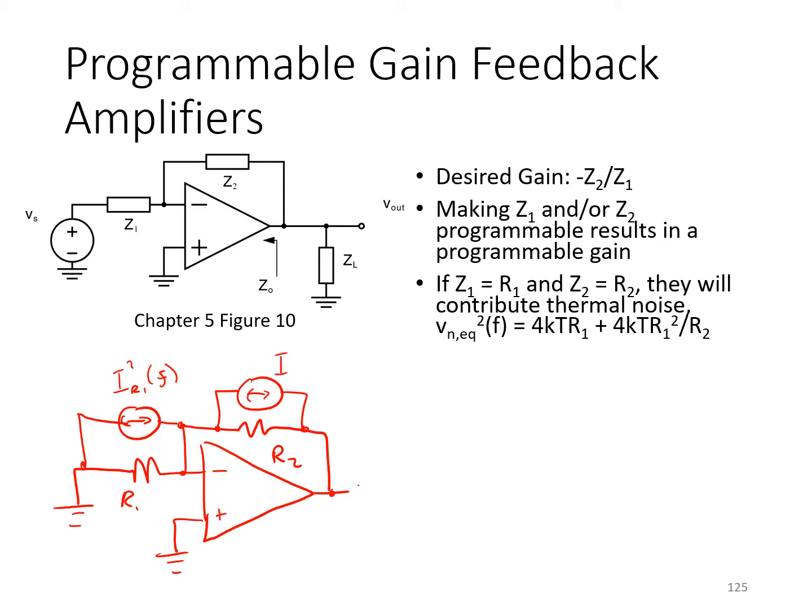As we know, these thermal noise sources are white. Here I've used the Norton equivalent noise source. So this one will have a noise spectral density of 4kT over R2.